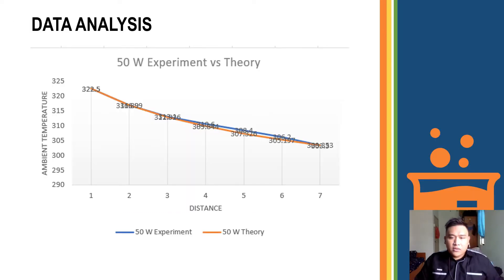First, we analyze our data. We choose the 50 watt as our data comparison between experiment and theory. As you can see, the data of the experiment and theory are almost the same. For the data of the experiment, we get the data from the actual experiment. And for the theory, we do our calculation based on the equation given on the lab sheet.